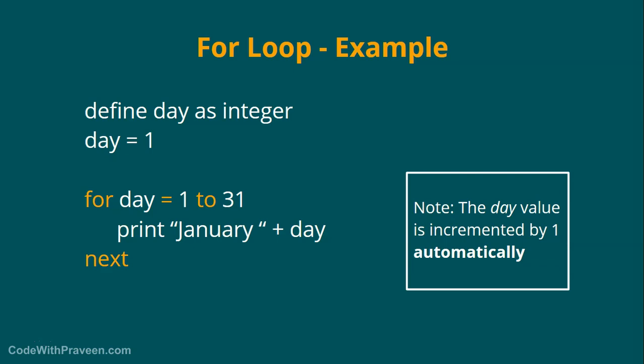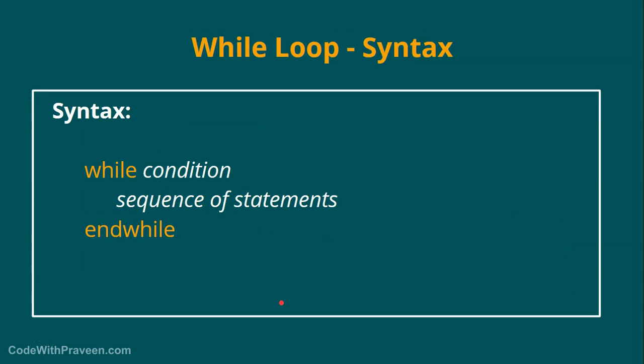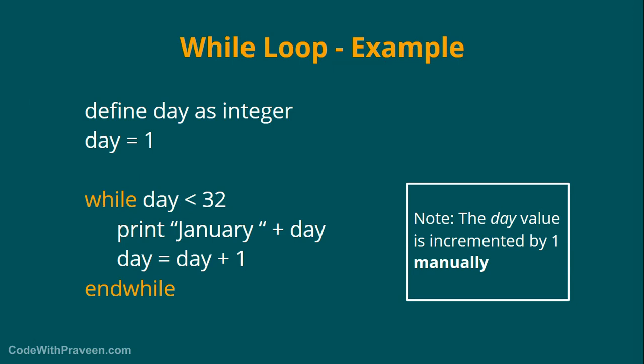Next let's check the while loop. The syntax of while loop is as below. We have the while keyword followed by the condition. Then we have the sequence of statements to execute and we end with end while. As you can see the syntax is a bit different from the for loop and it's a bit simpler. We just have the condition and the sequence of statements to execute. Let us quickly check with the same example which we saw in the for loop before. Now here we have again the same example where we try to print the January 1 till January 31st, but now we are using the while loop.